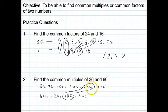180 is our lowest common multiple of 36 and 60. So that's our final answer. Our lowest common multiple is 180.